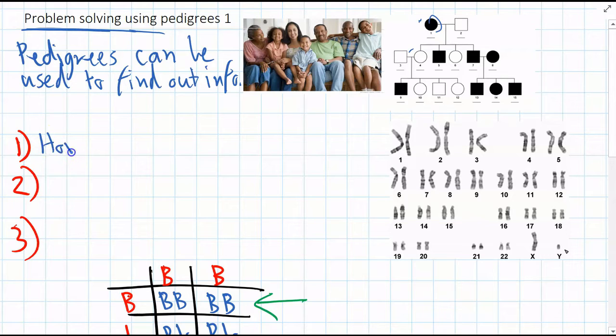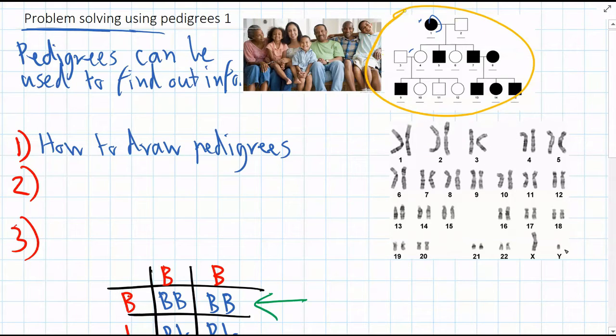So we need to know what pedigrees look like and what all the different parts mean. So here's an example of a pedigree up here showing three different generations. Generation 1, the grandparents, generation 2, the parents, and generation 3, the grandchildren.